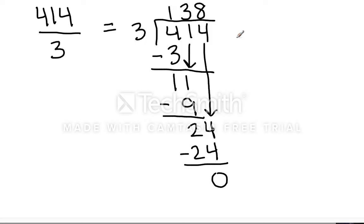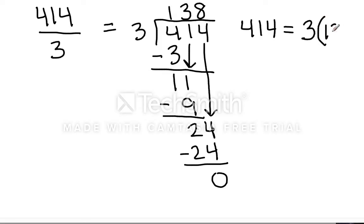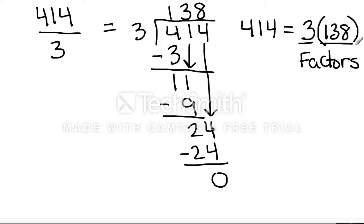This means that 3 goes into 414 an even number of times without a remainder, so I could actually rewrite 414 as factors of 3 times 138. So this can be rewritten in factored form as 3 times 138. Obviously 138 can be broken down into even smaller factors, but these are two numbers that as a product make up 414 — so they are factors.